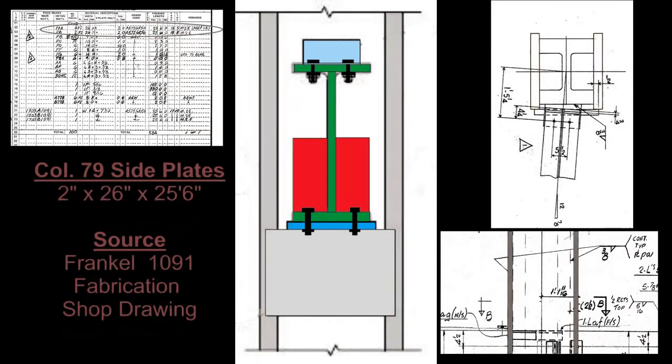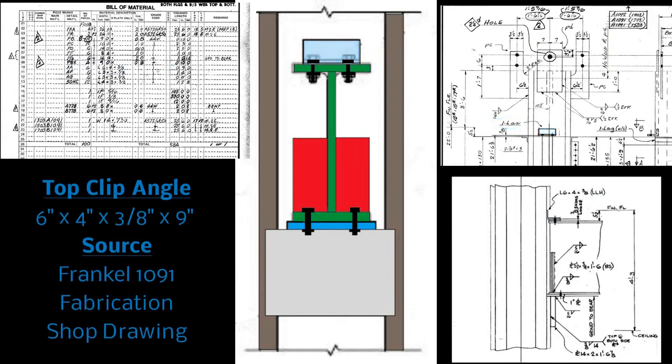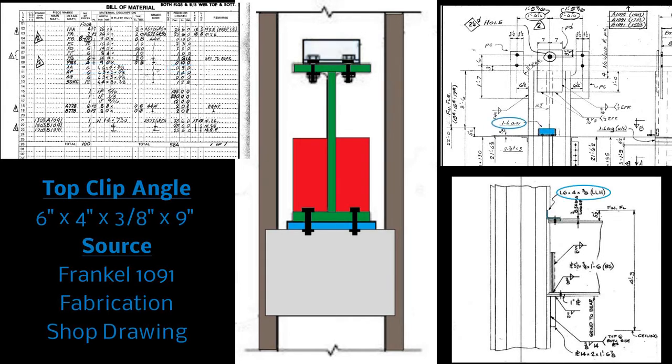On the sides of column 79 there are side plates. They are 2 inches by 26 inches and are attached by means of welding in lengths of 25 foot 6 inches. You can see them in Frankel 1091 fabrication shop drawing. At the top of the girder we have a top clip angle. It is 6 by 4 by 3/8ths by 9 inches. You can see it in Frankel 1091 fabrication shop drawing.